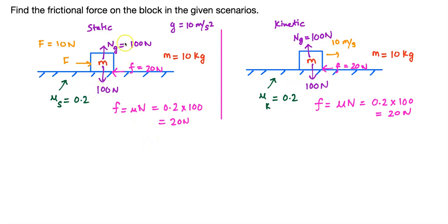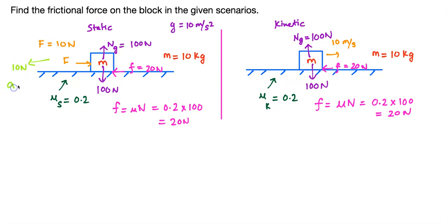Let's just look at the static case one more time. We have a force of 10 newtons acting in one direction and a frictional force of 20 newtons acting in the opposite direction. That means the net force on the block is 10 newtons to the left, which means the acceleration of the block would be 10 newtons divided by the mass — 1 meter per second squared to the left.